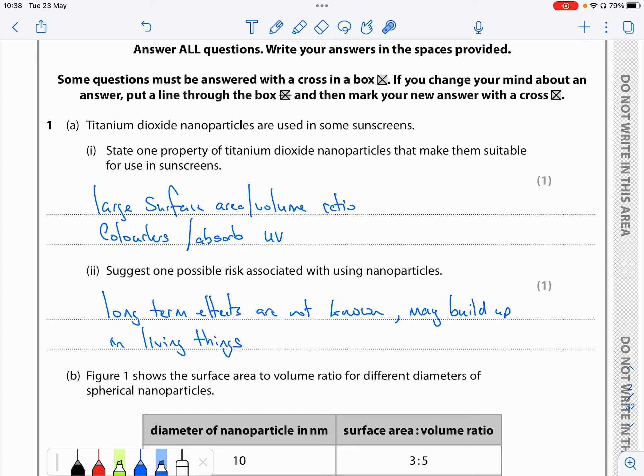So why they go for sun cream? Because they've got a large surface area to volume ratio, they also are colorless so you don't get the color on your skin when you put sun cream on, and they also absorb UV radiation from the sun to protect us.